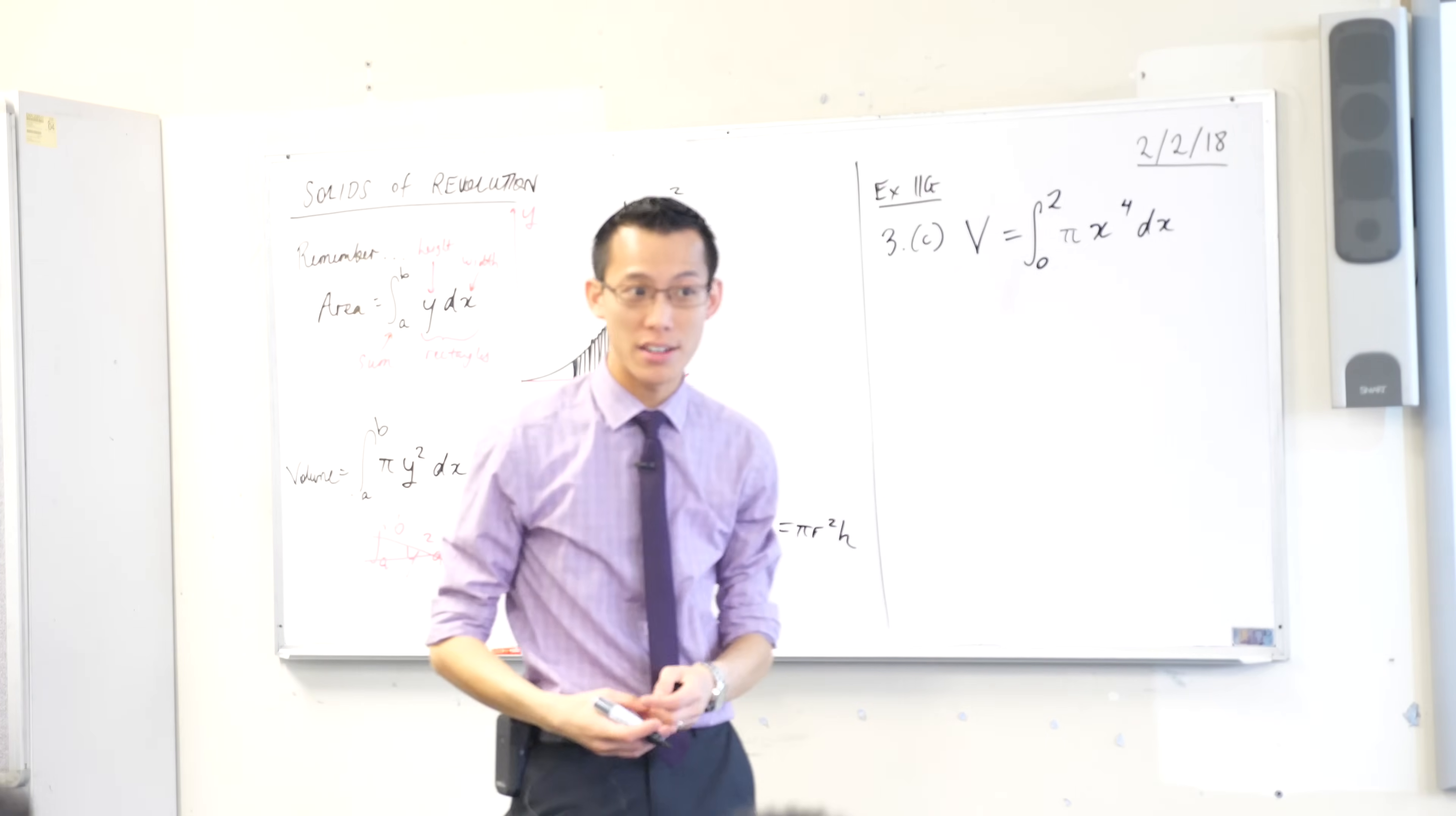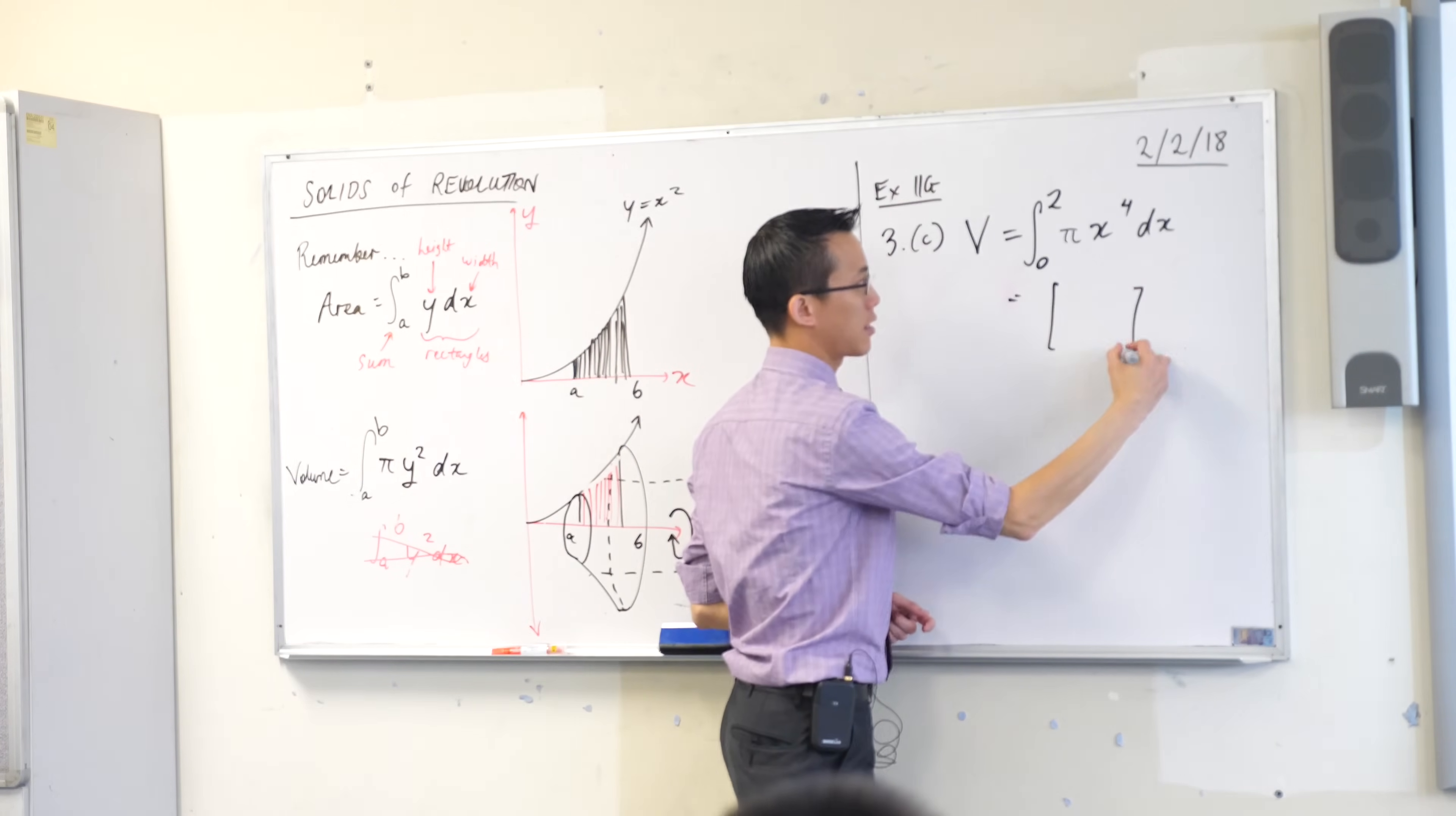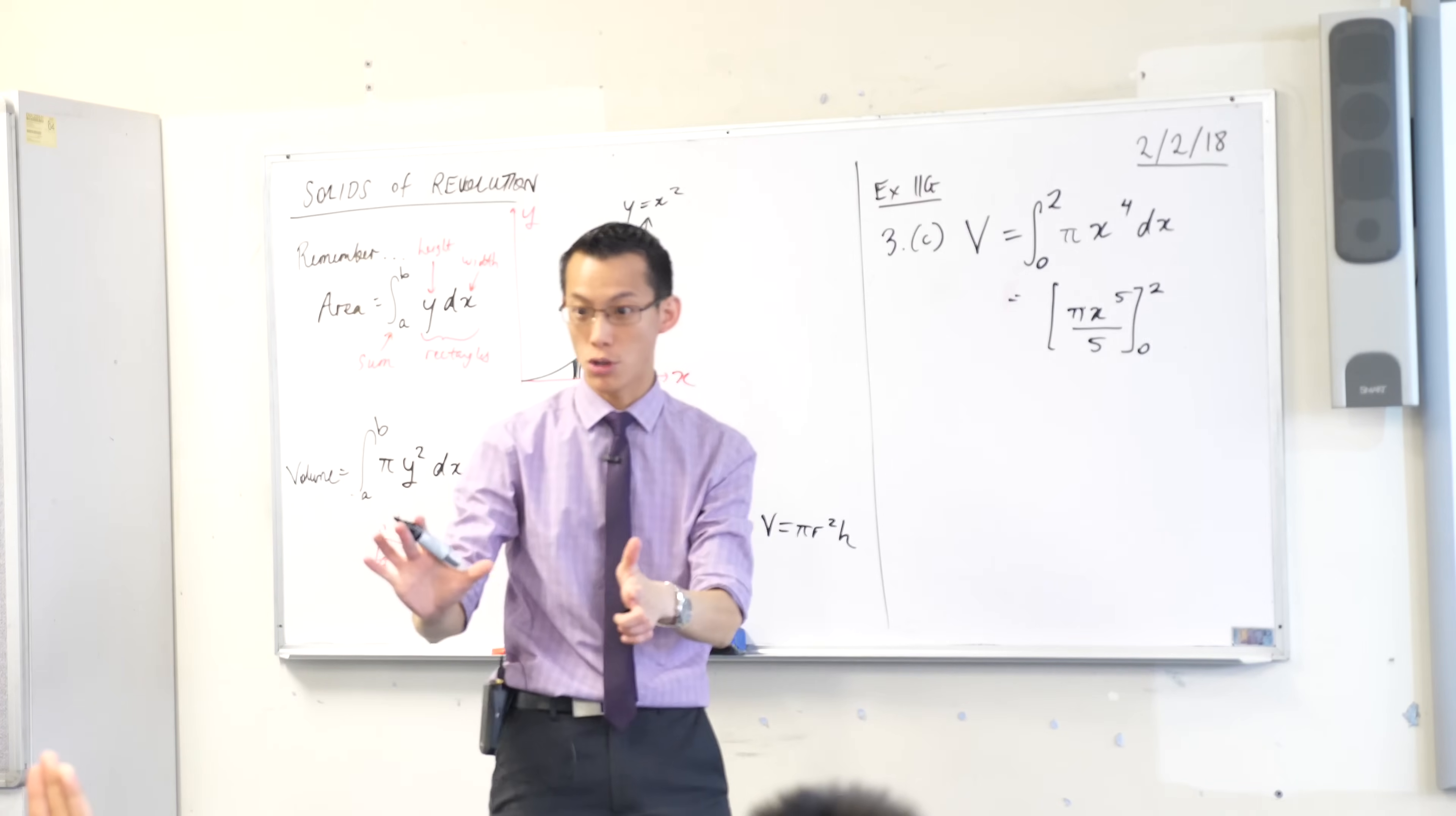The volume formula is not hard to use. There's just some conceptual mechanics you need to wrap your head around. This is no longer a volume question in a sense, it's just an integral, right? You don't need to know anything about volumes to do this. I've got a definite integral here. Can someone tell me what the primitive is? Pi x to the 5 divided by the new power, 5. And then of course I've got my boundaries, 0 and 2. All good?